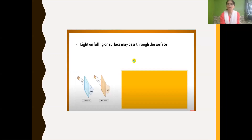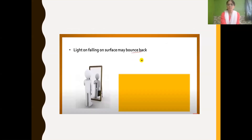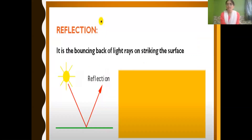When light falls through tinted glass, only some of the light passes through it. Sometimes light falling on the surface of some objects bounces back — that bouncing back of light rays on striking the surface is what we call reflection. Reflection is nothing but the bouncing back of light rays on striking the surface.